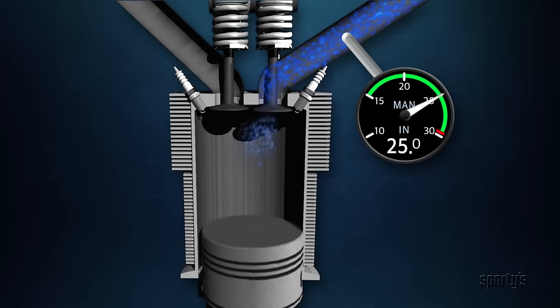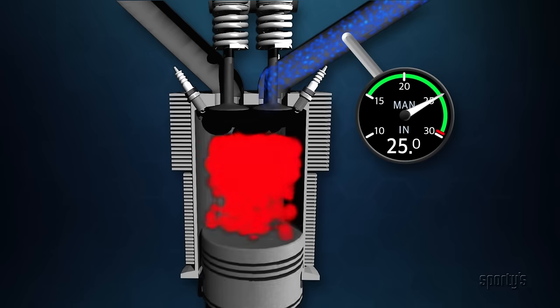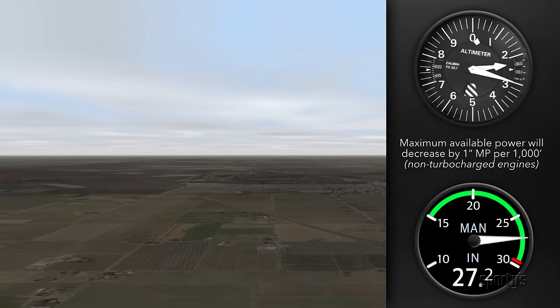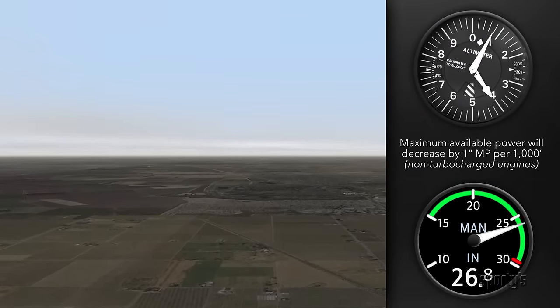Non-turbocharged or normally aspirated engines breathe the same air we do. Like normally aspirated humans, they lose power with an increase in altitude. As atmospheric pressure decreases with altitude, the engine runs out of breath.